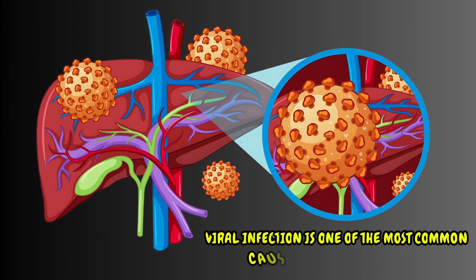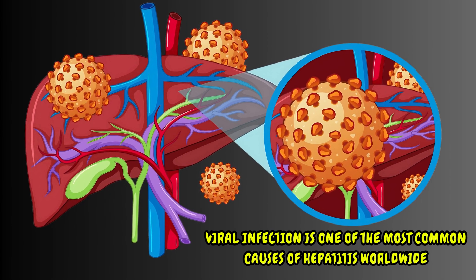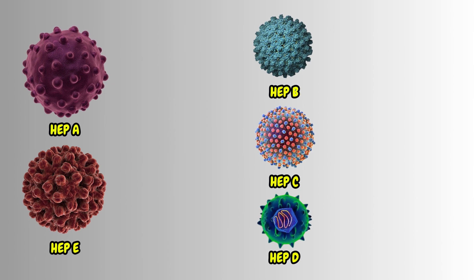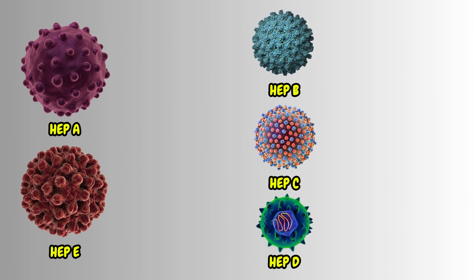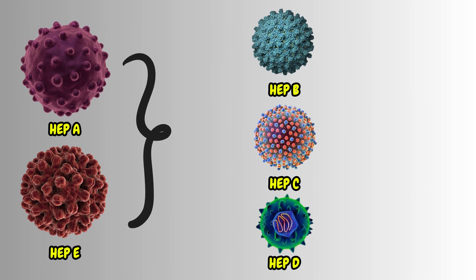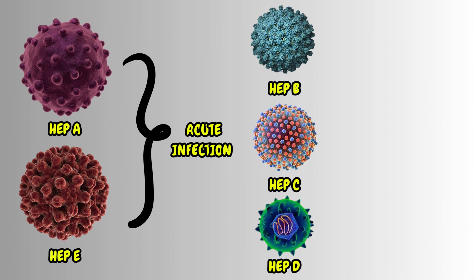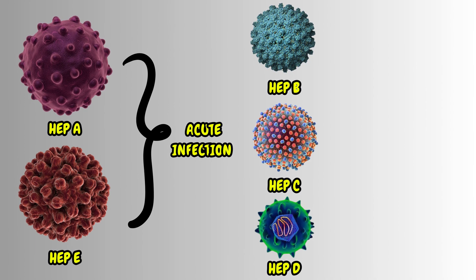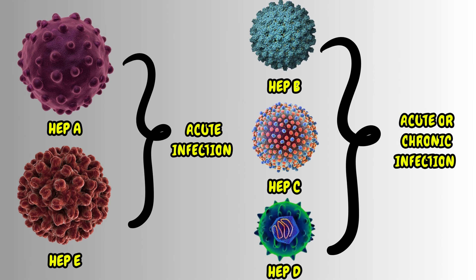Viral infection is one of the most common causes of hepatitis worldwide. Five viruses causing different forms of viral hepatitis have been identified. Out of those five, hepatitis A and E viruses cause acute hepatitis, whereas hepatitis B, C, and D viruses can cause both acute and chronic hepatitis.